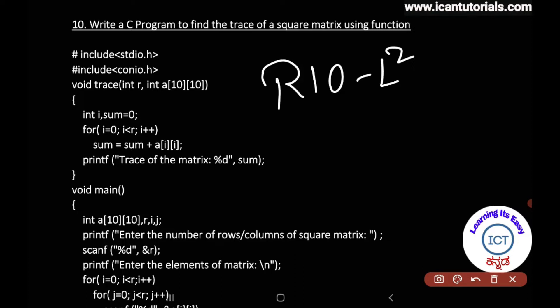Input: the square matrix is read as input. That is a two-dimensional array. Matrix input is the two-dimensional array. Output: the trace of the square matrix.